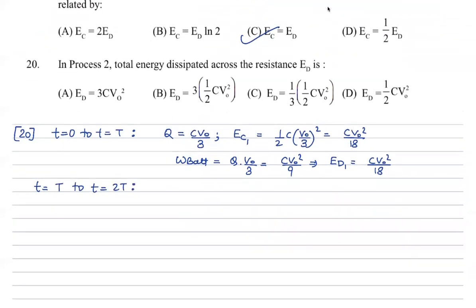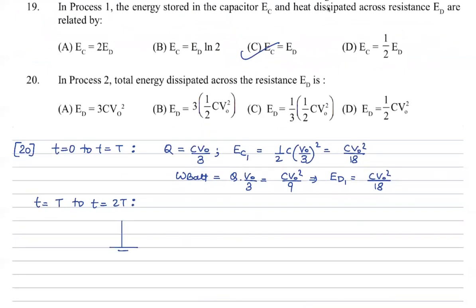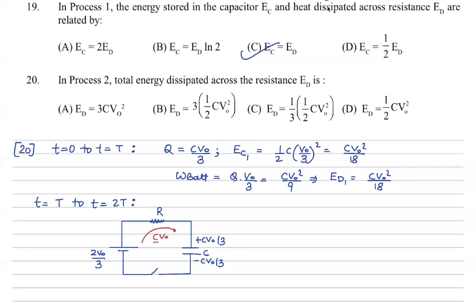From time T onward, a battery of 2V_not by 3 is now connected to the circuit with resistance R and capacitor. When the switch is closed, the capacitor already has charge plus CV_not/3 and minus CV_not/3. This battery now charges the capacitor further — delivering additional CV_not/3 charge — so the new energy stored in the capacitor is half C times (2V_not/3) squared.